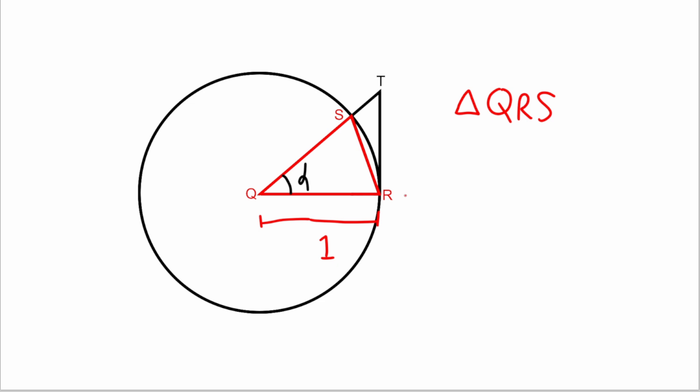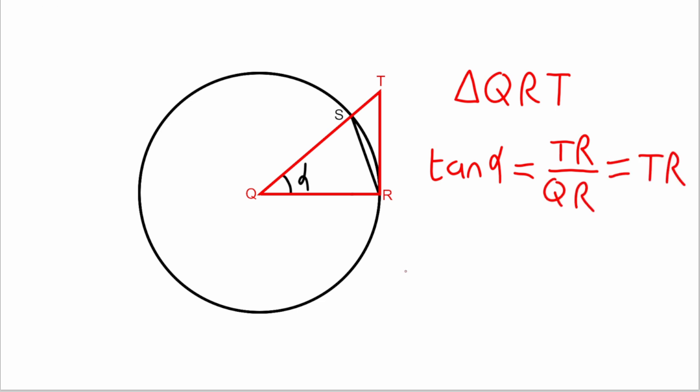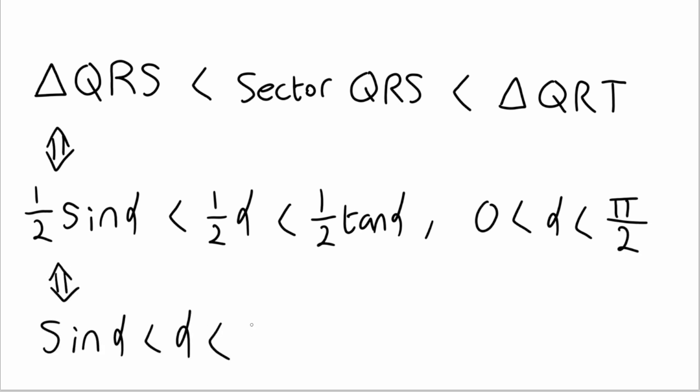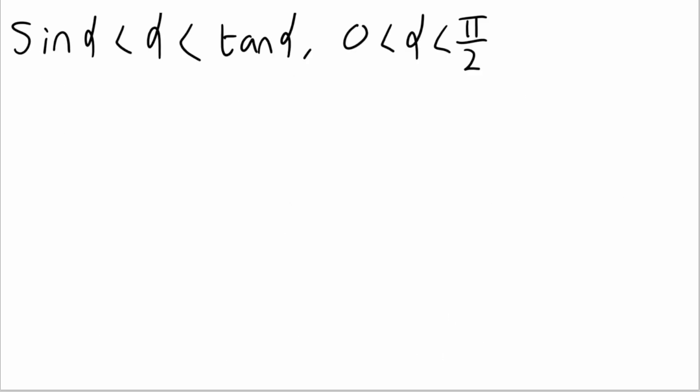Triangle qrs has a base of 1 and a height of sin alpha, therefore its area is 1 half times sin alpha. The area of a circular sector is the angle over 2 times the radius squared, and in the case of sector qrs, the radius is just 1, so its area is simply alpha over 2. The tangent of angle alpha is tr, the opposite, over qr, the adjacent. And since qr is just the radius, tangent alpha is tr. This means that the area of triangle qrt is 1 half times tangent alpha. This means that our initial inequality is equivalent to saying that 1 half sin alpha is less than 1 half alpha is less than 1 half tangent alpha, over the interval mentioned previously. We can also just cancel out the 1 half terms and say that sin alpha is less than alpha is less than tangent alpha.